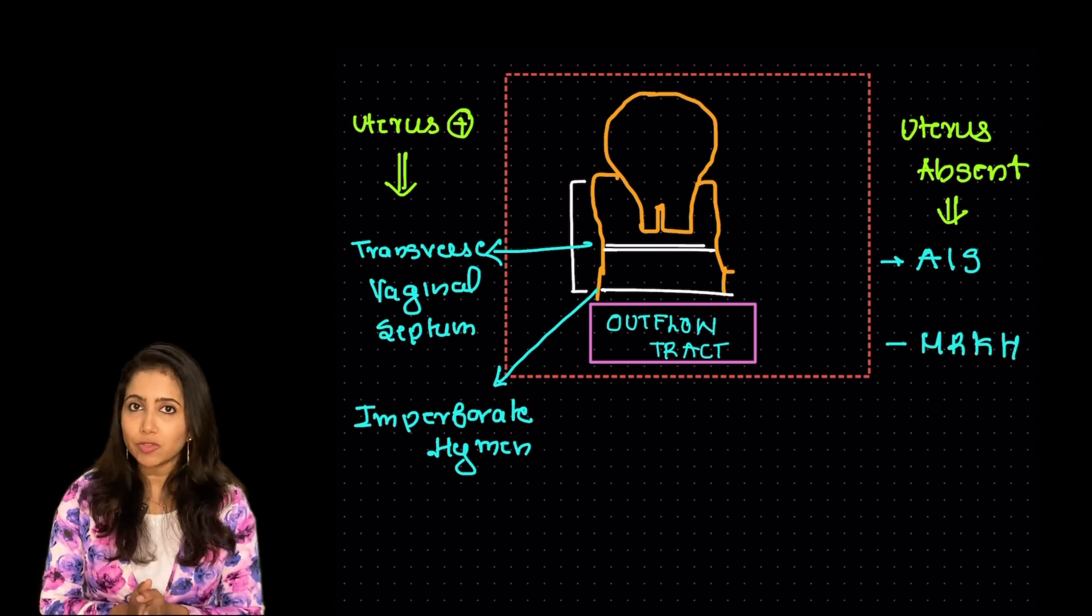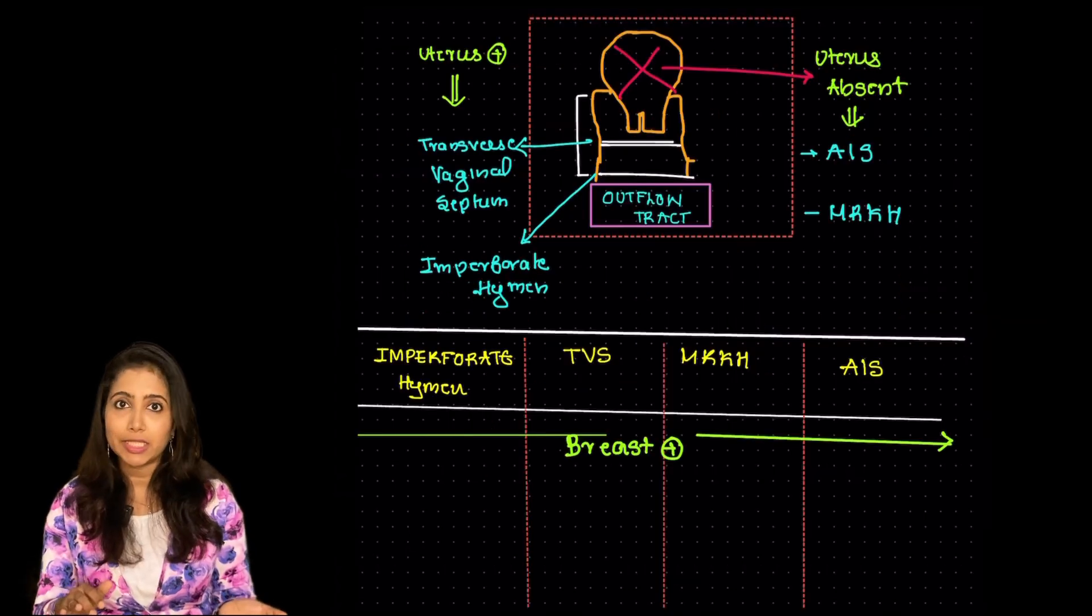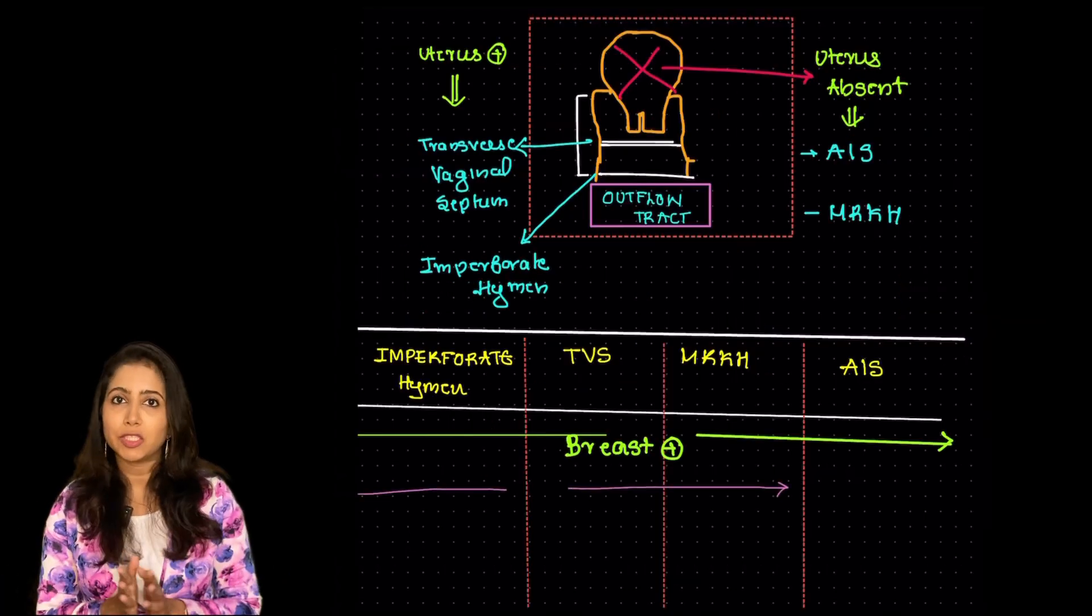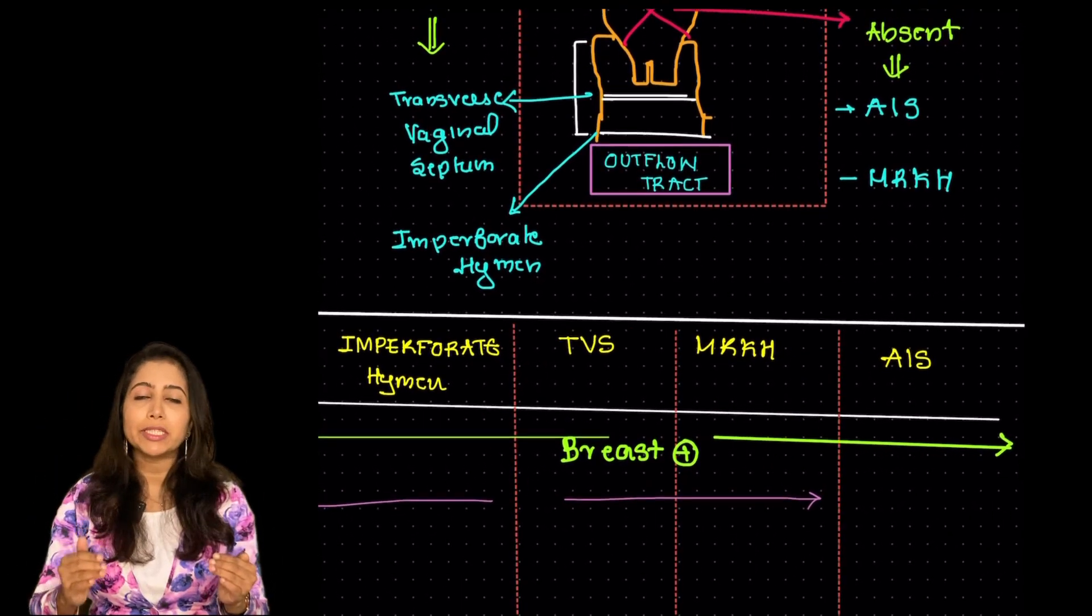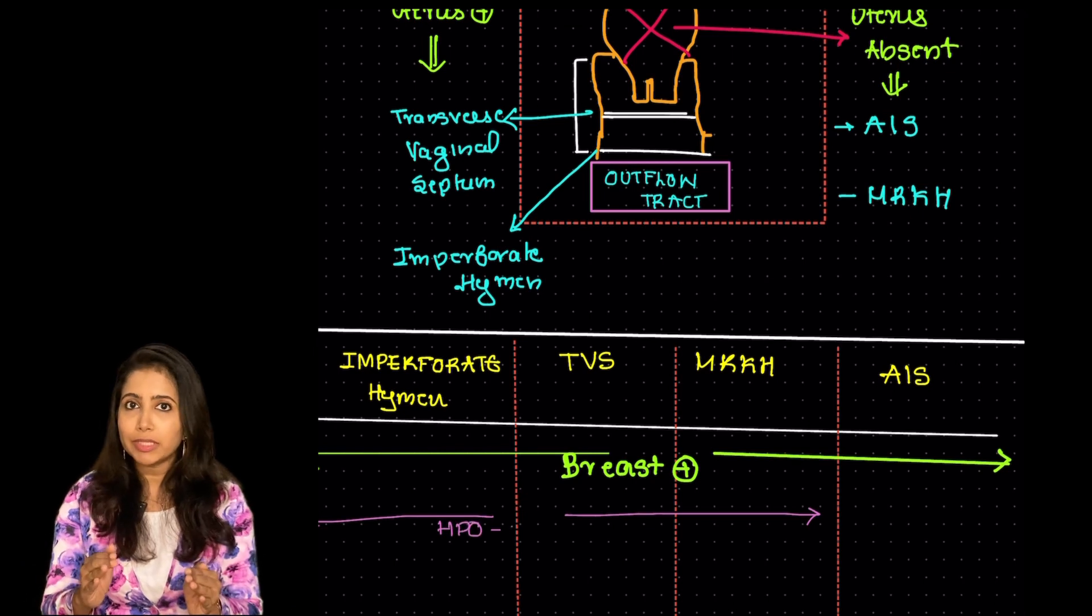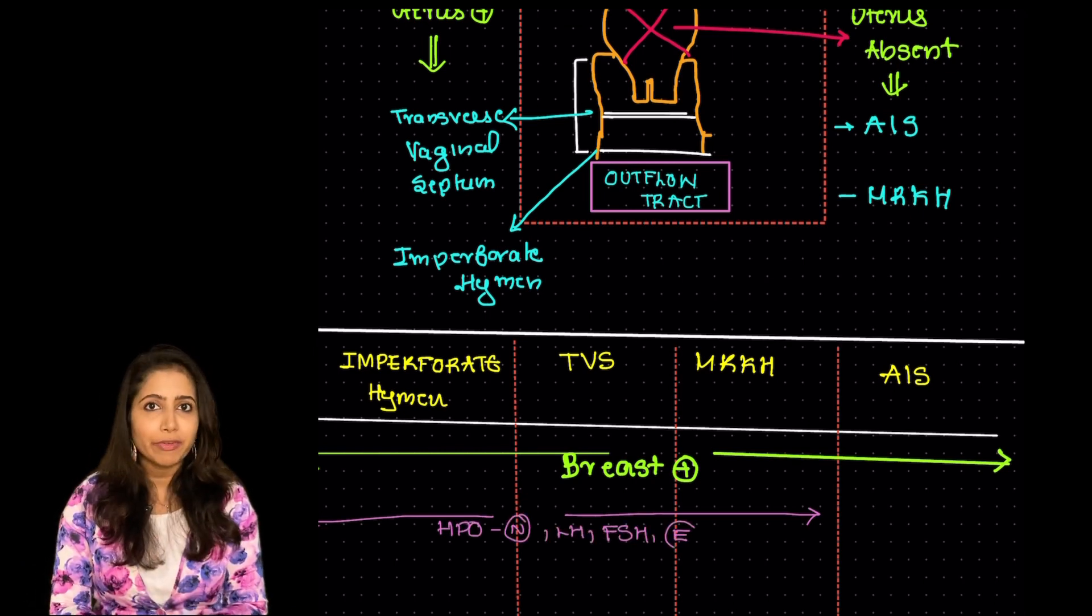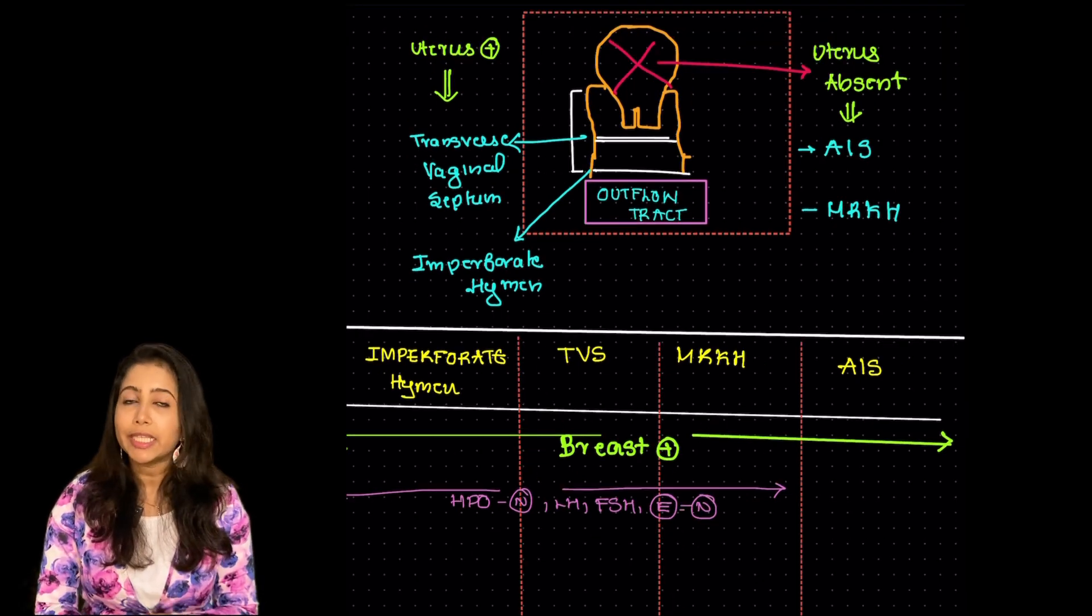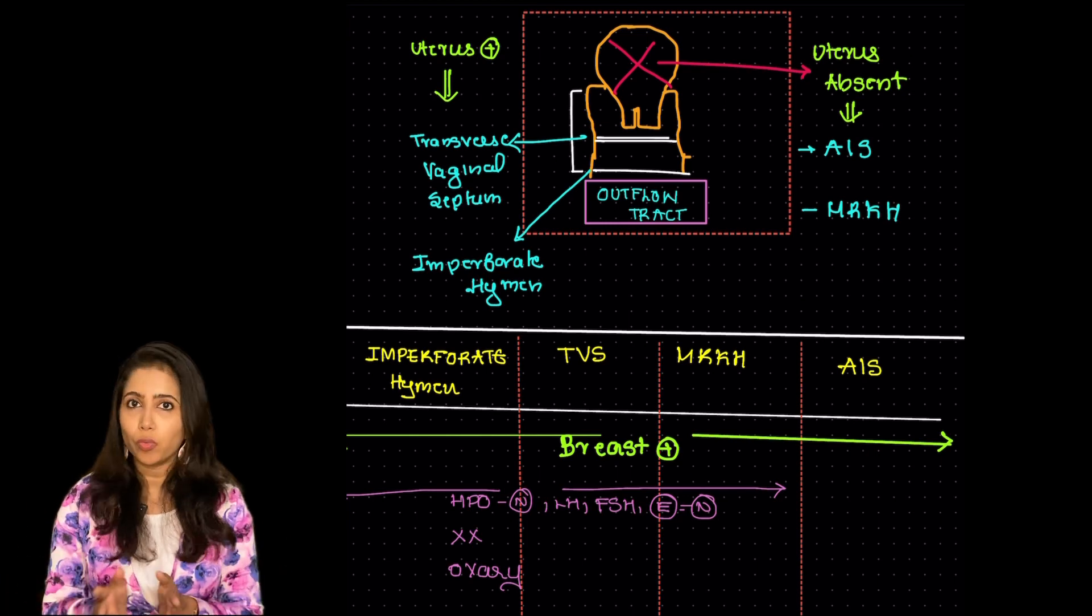In case of the cryptomenorrhea that is due to the imperforate hymen or transverse vaginal septum or MRKH as well what you have to understand is that everything above that is the HPO axis is intact. Only problem is at the level of outflow tract. So the level of LH, FSH, estrogen is going to be normal.